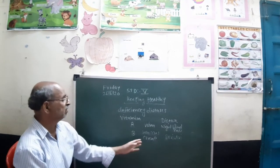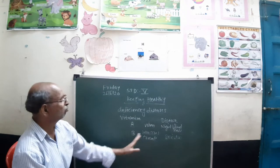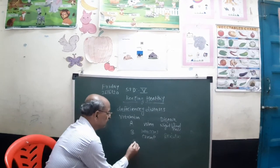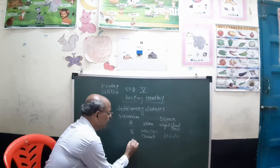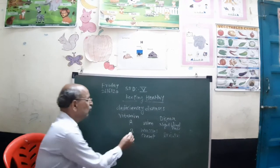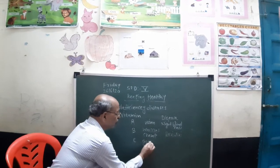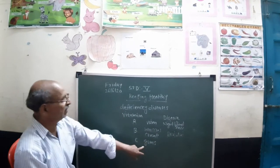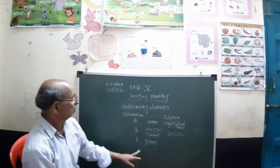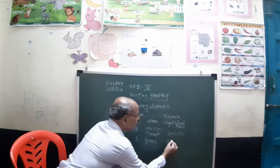Vitamin B can be obtained from whole grains, fruits, and vegetables. The third vitamin we require is Vitamin C. If you are not getting enough Vitamin C, your gums and teeth will not be healthy and you will suffer from the disease called scurvy.